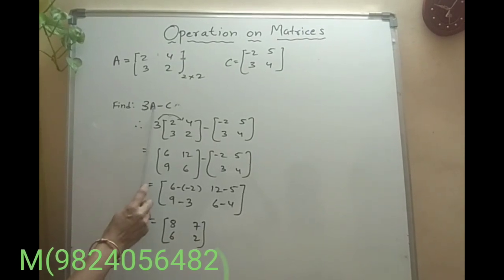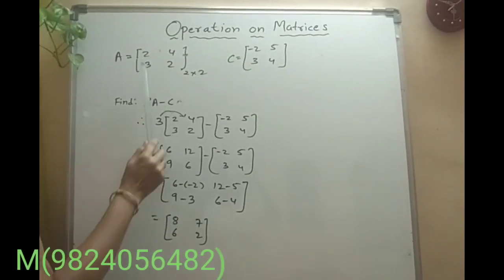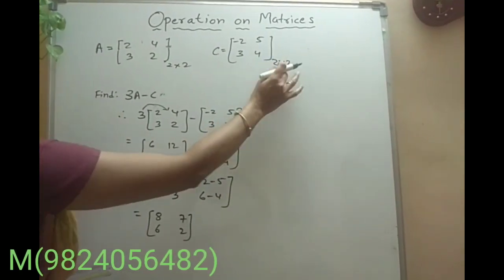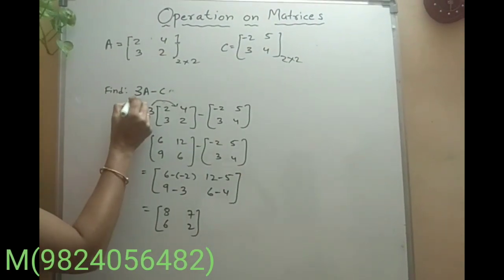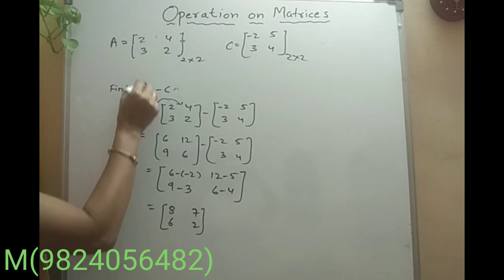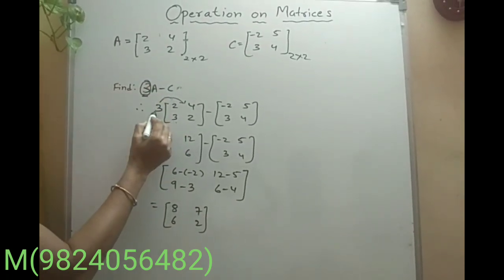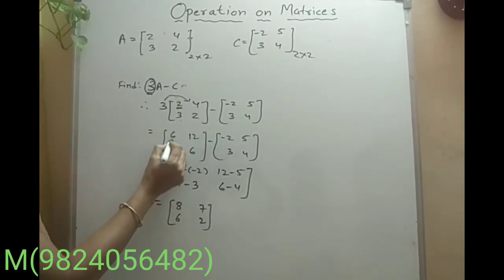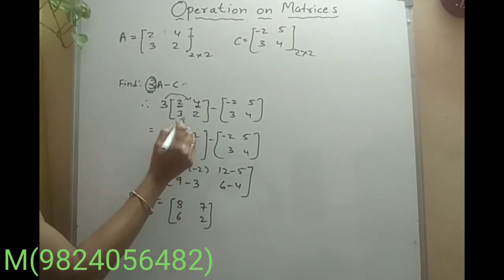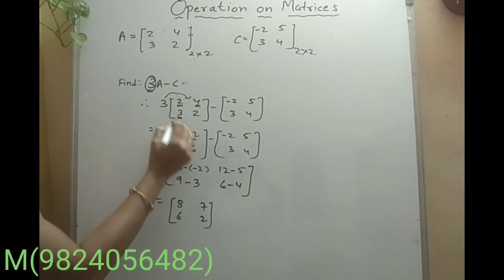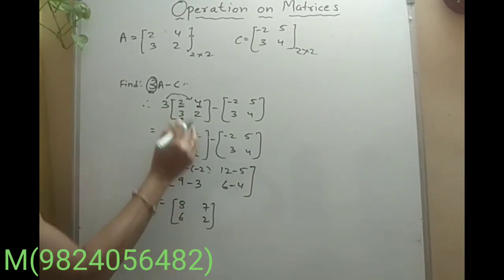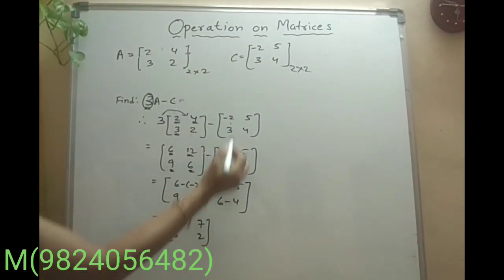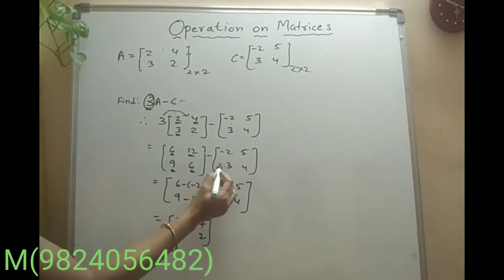Now another operation: 3A minus C. When we take A, we already have a 2 by 2 matrix, and the algebraic operation is possible because the order is the same. When we say 3A, this 3 is a scalar quantity multiplied by matrix A. When this 3 goes inside, it is multiplied to each and every element: 3 multiplied by 2 is 6, 3 multiplied by 4 is 12, 3 multiplied by 3 is 9, and 3 multiplied by 2 is 6. So this is the new matrix. Minus C from the question is then written alongside.